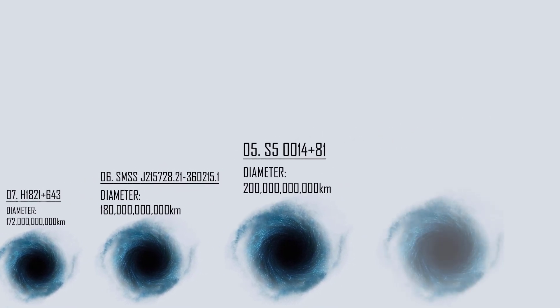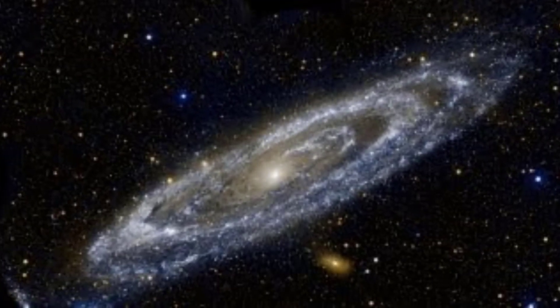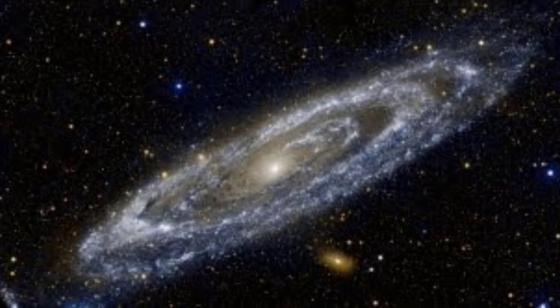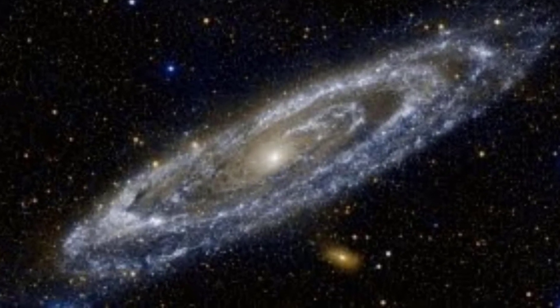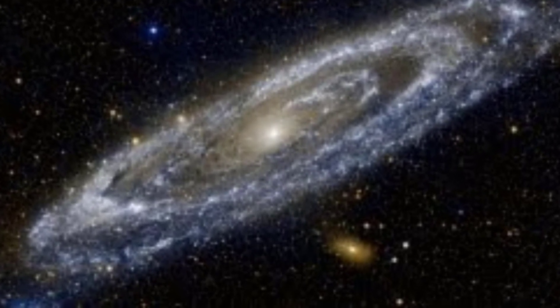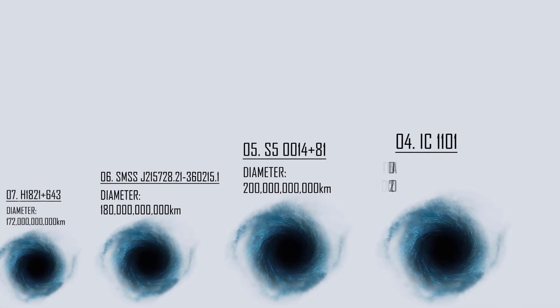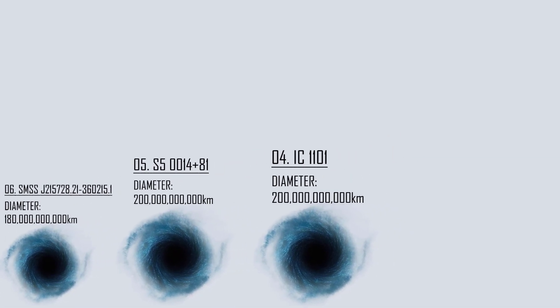Number 4: IC 1101. IC 1101 is among the largest known galaxies but there is a debate in the astronomical literature about how to define the size of such a galaxy. It has a bright radio source at the center which is likely associated with an ultra-massive black hole in the mass range of around 40 billion solar masses, one of the largest known and a diameter of around 20 times the orbit of Pluto around the sun.